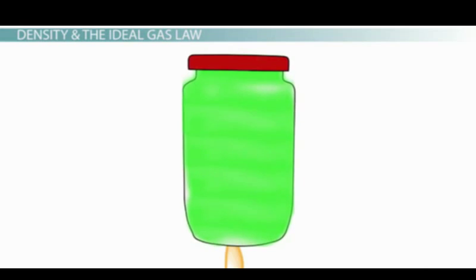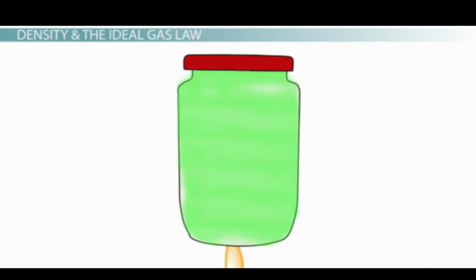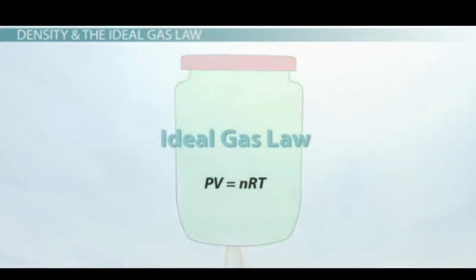We can calculate how the density of air changes with changing temperatures using the ideal gas law. The ideal gas law is defined as PV equals nRT.